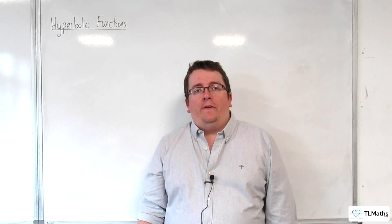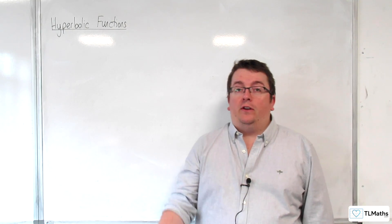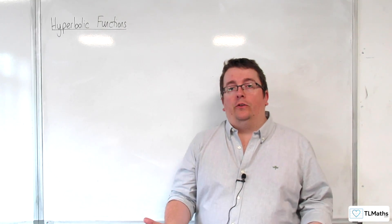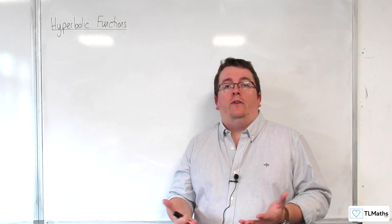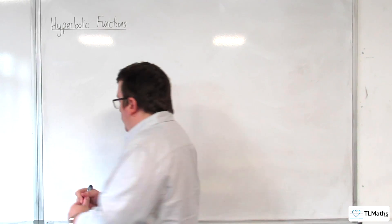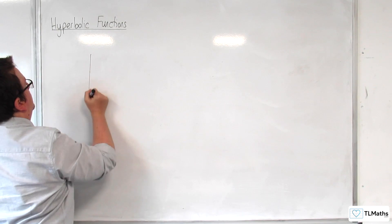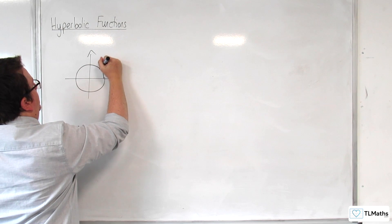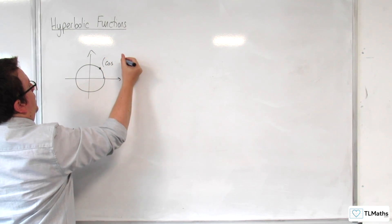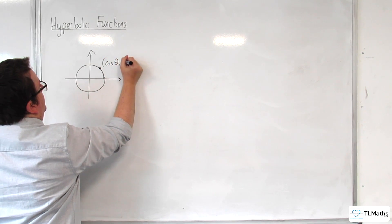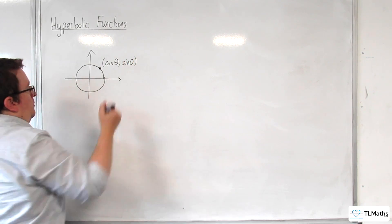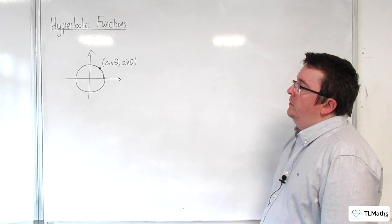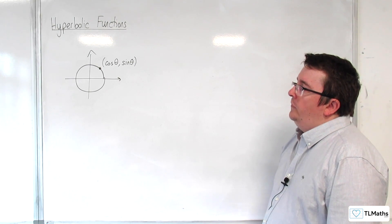The trig functions are often referred to as the circular functions, and the reason why that is is because sine and cosine parameterize the circle. So, a circle, a point on that circle, you can write as cosine of theta, sine theta, for example. And that's why they're referred to as the circular functions.